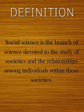Now let's talk about social science. Social science is the branch of science devoted to the study of societies and relationships among individuals within societies. The place of social science is society — it is the study of human society and social relationships.